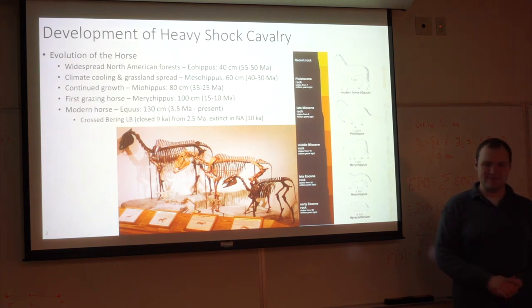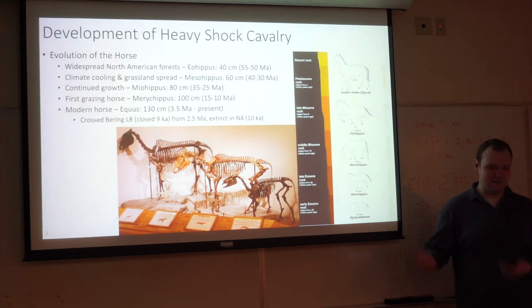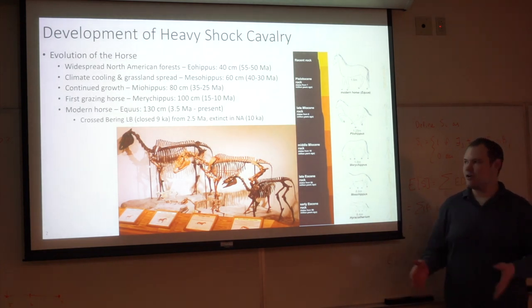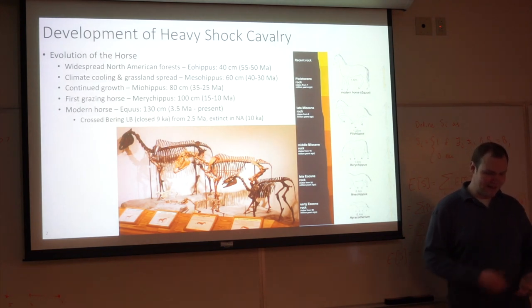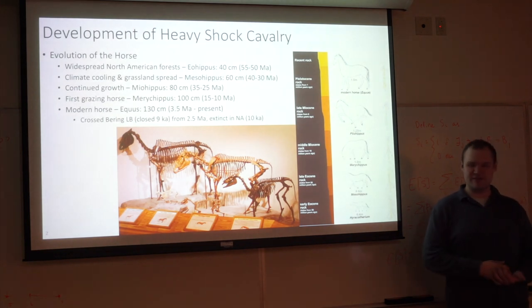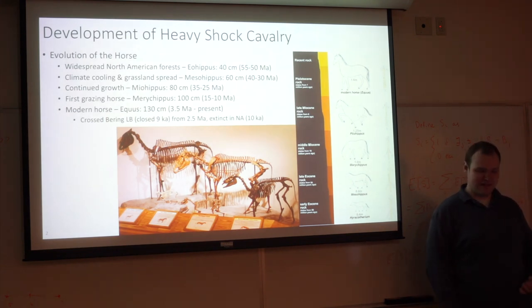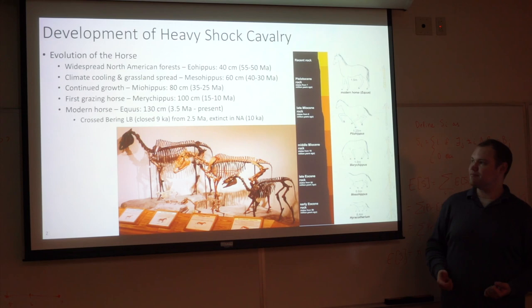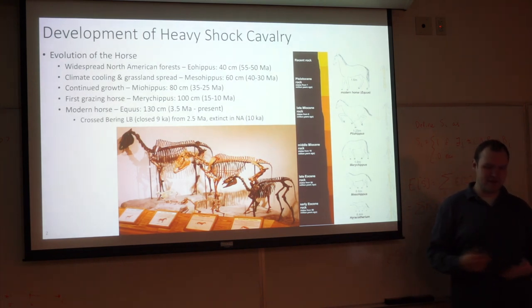The horse evolved from a very small animal called Eohippus, which lived around 50 to 55 million years ago in North America. This was only about 40 centimeters tall — a very small, dog-sized creature. Over the next couple dozen million years, the climate in North America became cooler, the forest receded, the grasslands spread. So the descendants of Eohippus became progressively larger: Mesohippus at 60, Miohippus at 80, Merychippus at 100 centimeters, until you get to the modern horse, Equus, at 130 centimeters in height, first appearing around 3.5 million years ago.